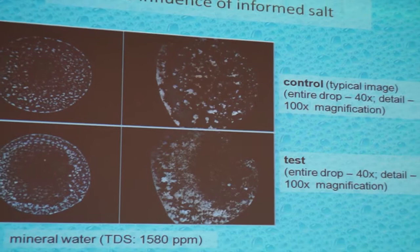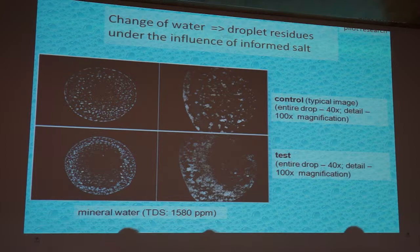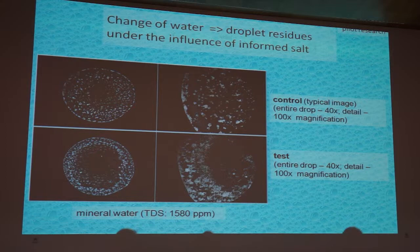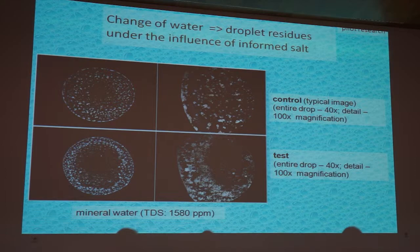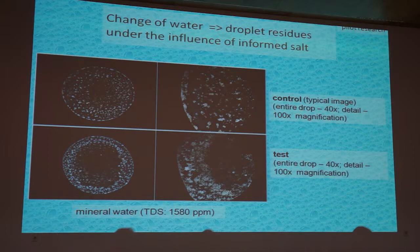We also tested an informed salt, prepared by certain methods similar to homeopathic impressions. We were amazed to see that water exposed to such salt made quite different patterns. The lower row represents the exposed water and the upper row represents the control. These inner structures are absent in the control, but other structures were formed in the exposed sample.